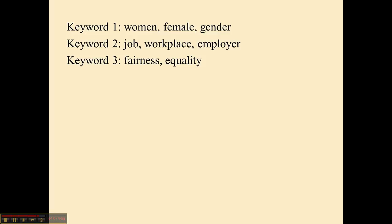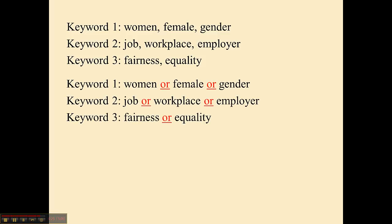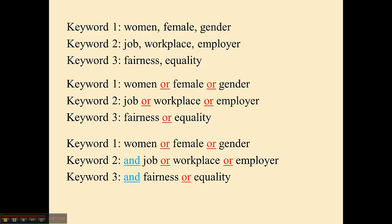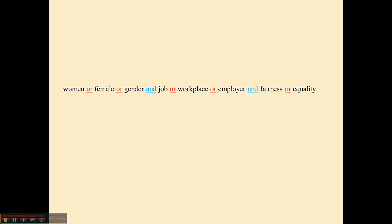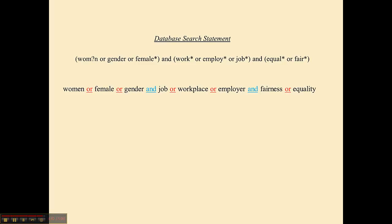The last part of this: these were our keywords from our example. Putting in Boolean operators simply means that I'm going to put ORs in between each synonym and then AND in between each different concept. So far, this is what our example looks like — we're not quite there yet. The next part covers two functions: phrase searching and nesting. Come back for part three, and if you have any questions please let us know.